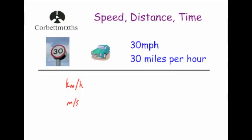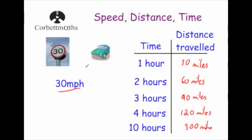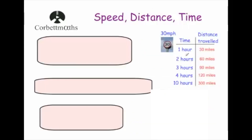Let's look at speed in a little more detail. At 30 miles per hour: in one hour, 30 miles; two hours, 60 miles; three hours, 90 miles; four hours, 120 miles; ten hours, 300 miles. Notice that if you divide the distance by the time in each case — 30÷1, 60÷2, 90÷3, 120÷4, 300÷10 — you always get 30. So whenever you divide the distance traveled by the time, you get the speed.